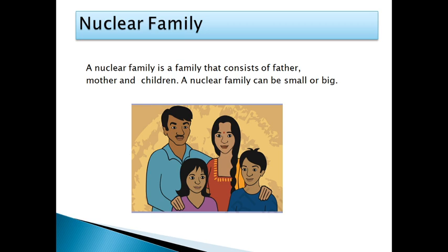Next is nuclear family. In a nuclear family, parents — father and mother — and children live together. A nuclear family can be small or big depending on how many children there are. If there are one or two children it will be a small family; if there are more than two or three children it will be a big family.